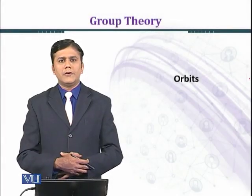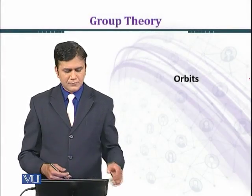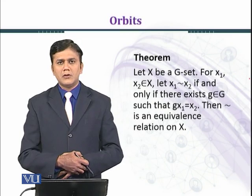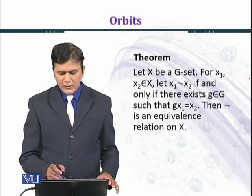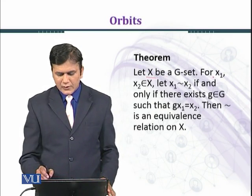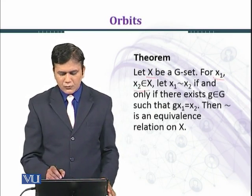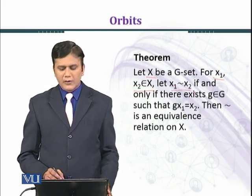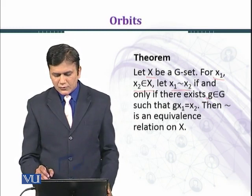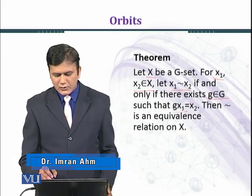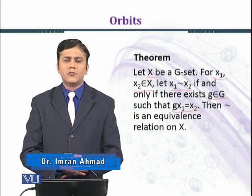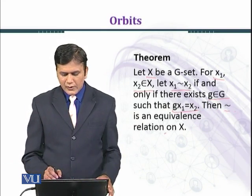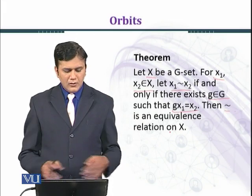In this module we shall introduce orbits. Before introducing orbits, we shall state and prove our theorem. Let X be a G-set. For x₁, x₂ belonging to X, x₁ relates to x₂ if and only if there exists g belonging to G such that g·x₁ equals x₂. Then this relation is an equivalence relation on X. Let's prove the theorem.